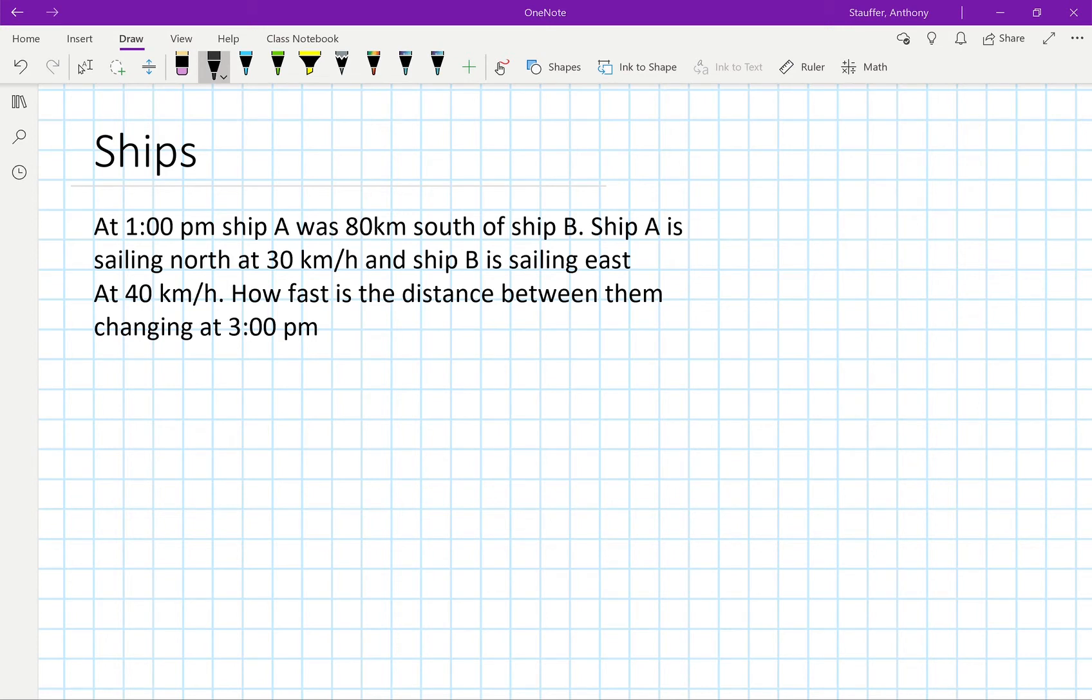Hey guys, the next one we have is the ship question. At 1 pm, ship A was 80 kilometers south of ship B. Ship A is sailing north at 30 km/h and ship B is sailing east at 40 km/h. How fast is the distance between them changing at 3 pm?